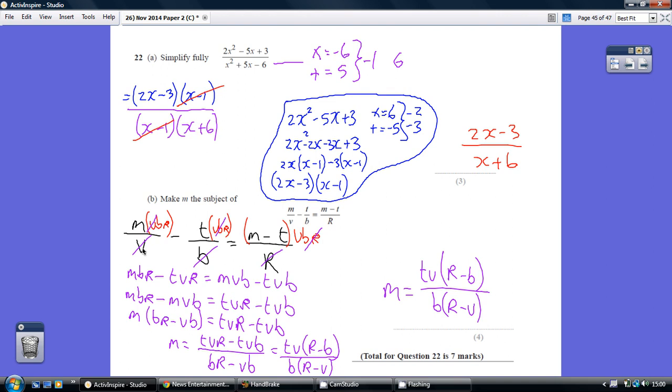And then I've cancelled out the bits, so the V and the V's cancel, the B and the B, and over here the R and the R. And then I've taken the opportunity to also multiply out this bracket, so M times VB minus T times VB, giving us this line.